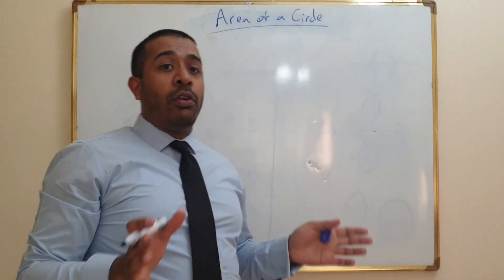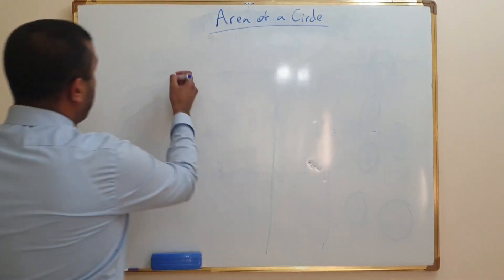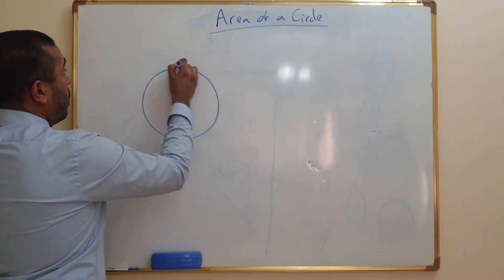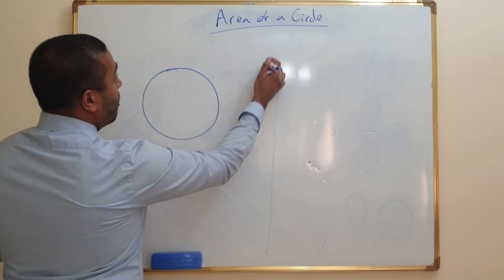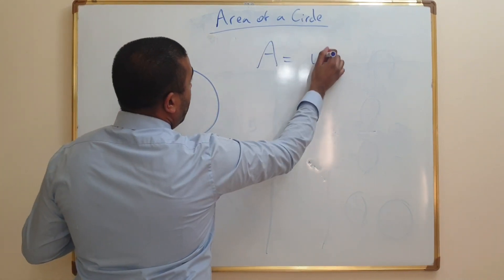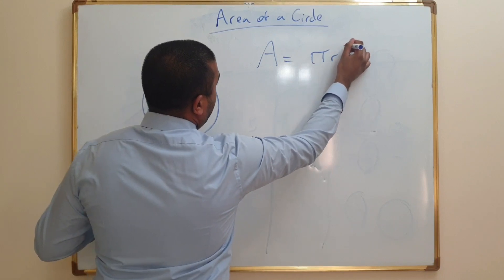All you have to remember is the simple formula pi r squared. So this is a circle. Okay, now the formula for area is pi r squared.